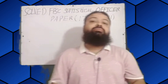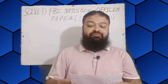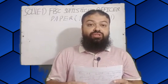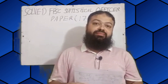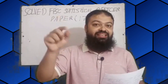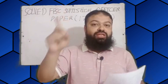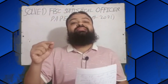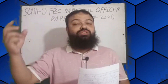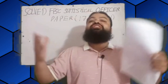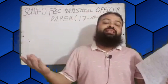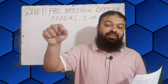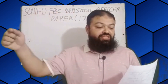Question number one: which average is mostly affected by the outliers? The answer is arithmetic mean. Arithmetic mean is the correct option. Whenever we have extreme values in the data, the arithmetic mean will be affected the most.